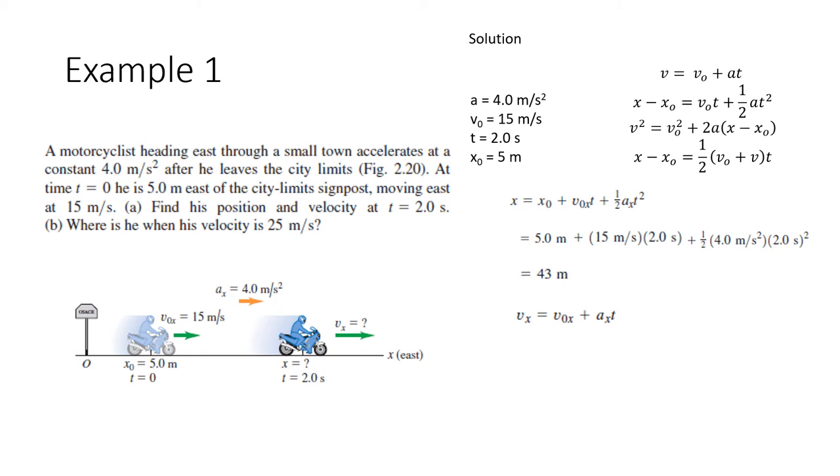V is equal to V sub O plus A T. So ibutang na ito na. Ayog ka libig sa V sub X. Pasabutan ng V sub X along the X axis or horizontal axis. So i-substitute dahil na ito. Tanang na mga values ang V sub O, 15 meters per second. Ang acceleration, 4 meters per second squared. O ang time, 2 seconds. So mahalap na ito ang final velocity ng V sub X.